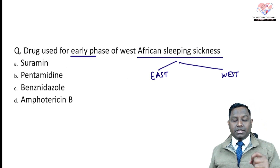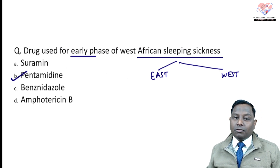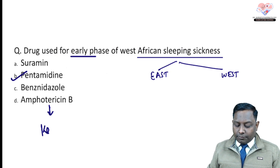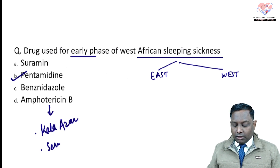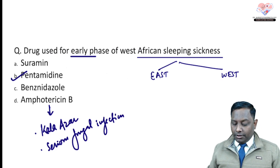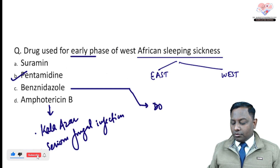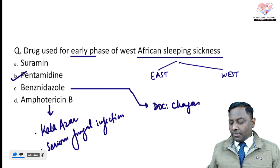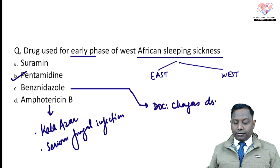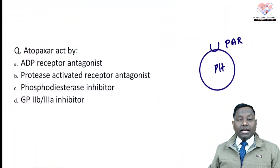Early phase of West African sleeping sickness: Pentamidine. Amphotericin B is the drug of choice in kala-azar and also in serious fungal infections, acting by creating pores in the fungal cell membrane. Benznidazole is the drug of choice for Chagas disease. Suramin is the drug of choice for East African sleeping sickness.